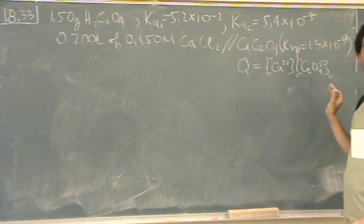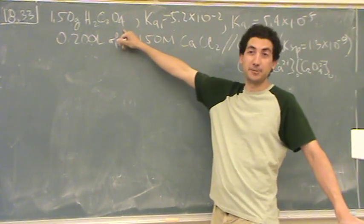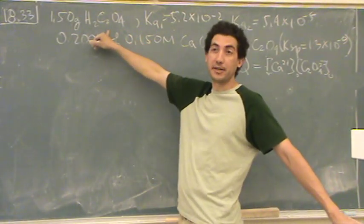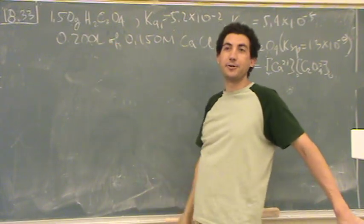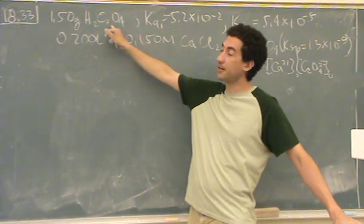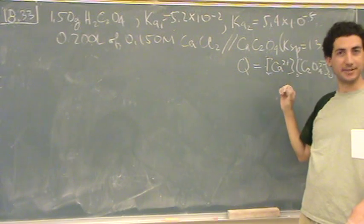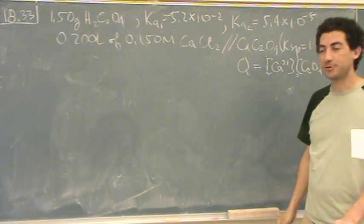But once we find that, we find Q, we compare it to K, we find out if it precipitates. Does that make sense? To find this concentration is painful because this is a polyprotic acid. So we're doing a polyprotic question to find this particular concentration.